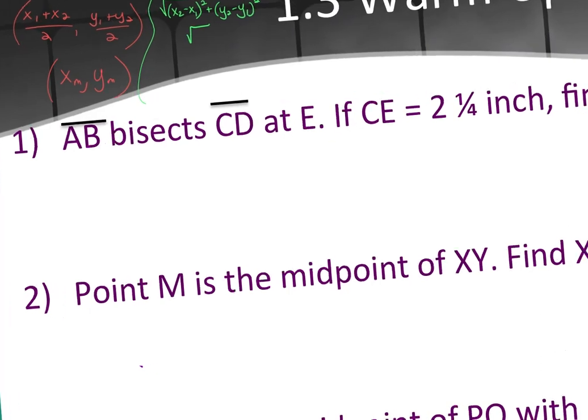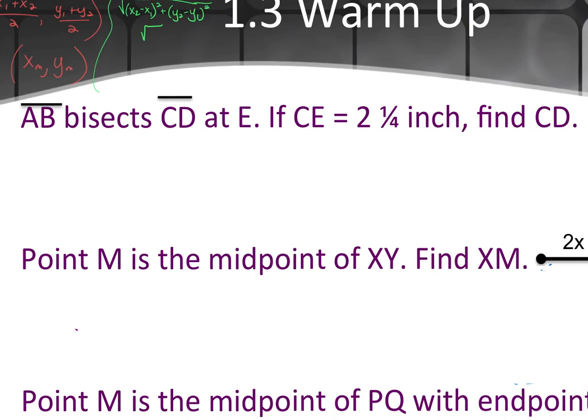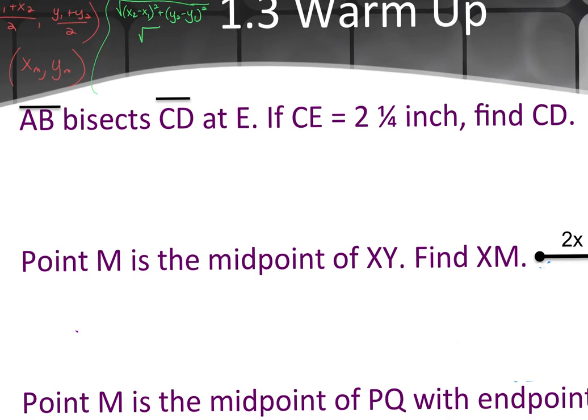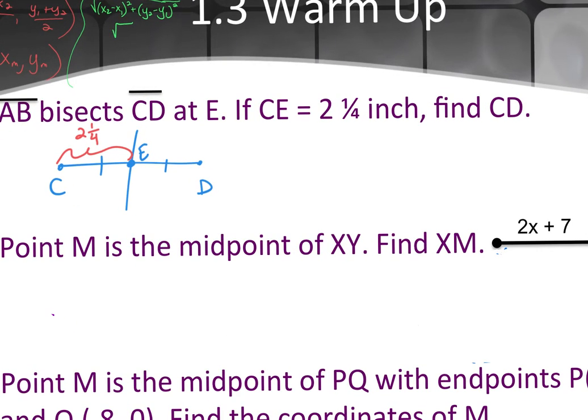All right, so number one says AB bisects CD at E. If CE is 2 and 1/4 inch, find CD. If you are a visual person, like I like to draw stuff out, feel free to do it. If I have CD, and I have something that bisects it at E, it's going to look like this. It's going to be cut into two congruent parts. If CE is 2 and 1/4 inch and it wants you to find CD, how do I do it?